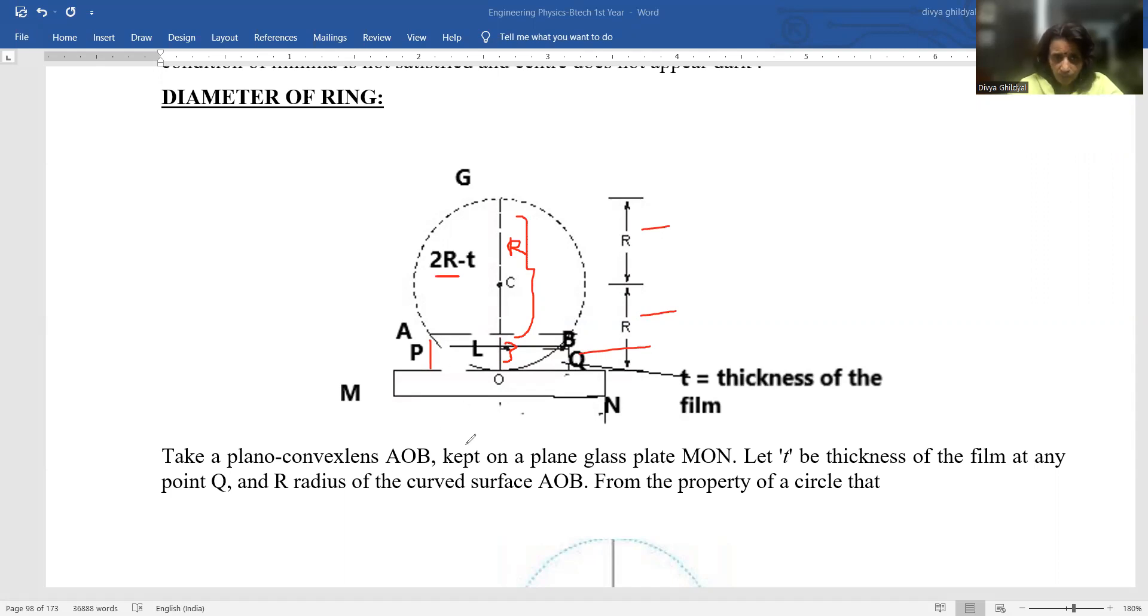We have taken up the plano convex lens AOB kept on the plane glass plate MON. T is my thickness of the film at any point, and R the radius of the curved surface AOB.